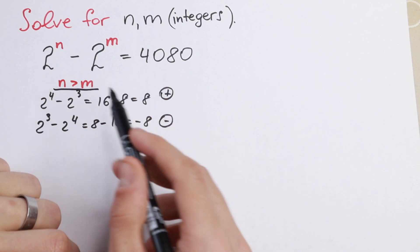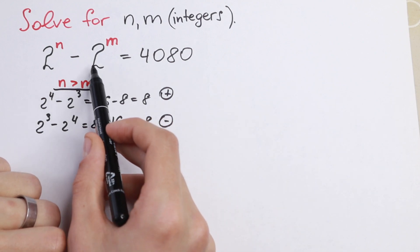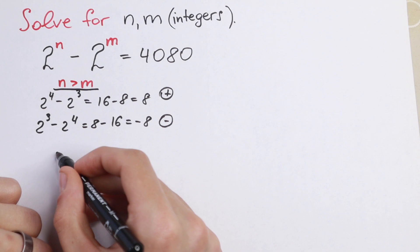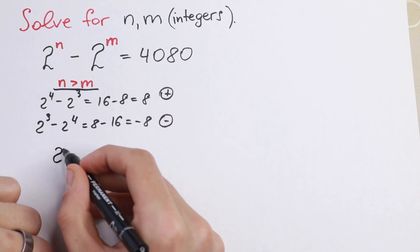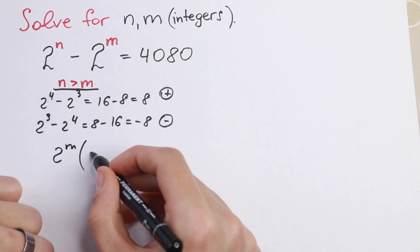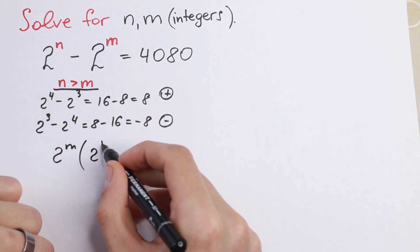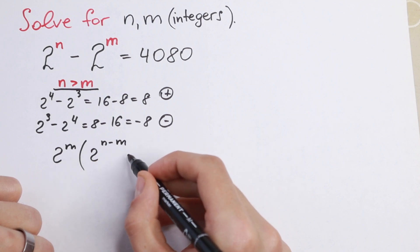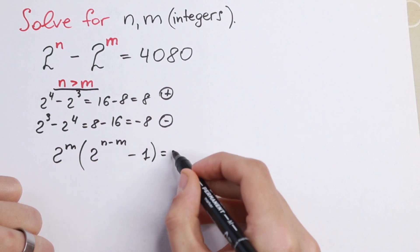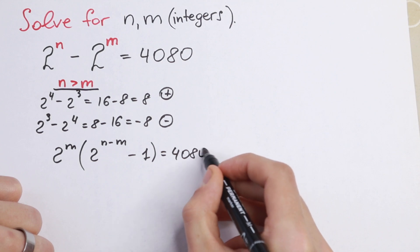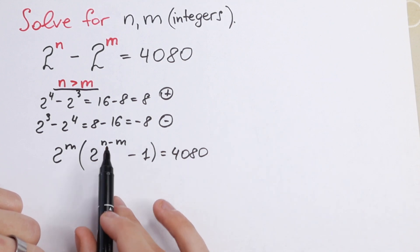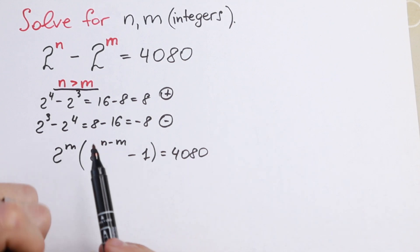The best way to solve this is to factor out 2 to the power m. In parentheses we will have 2 to the power (n minus m), and minus 1, equal to 4080. So we factor out 2 to the power m.